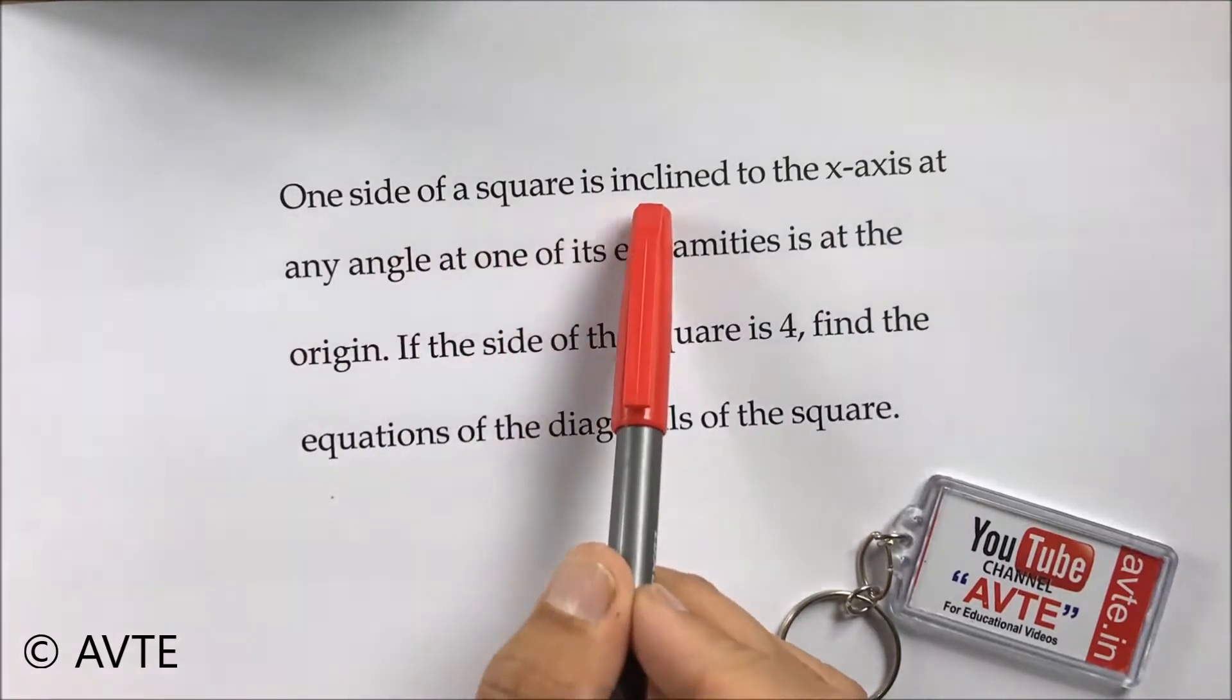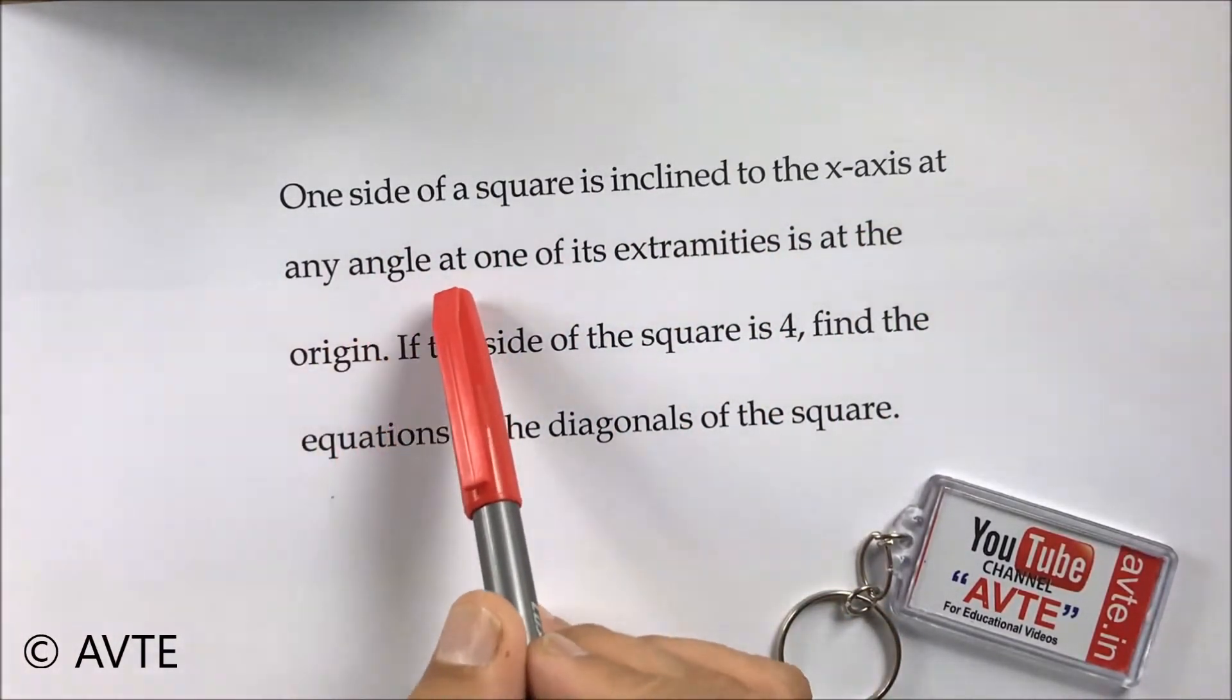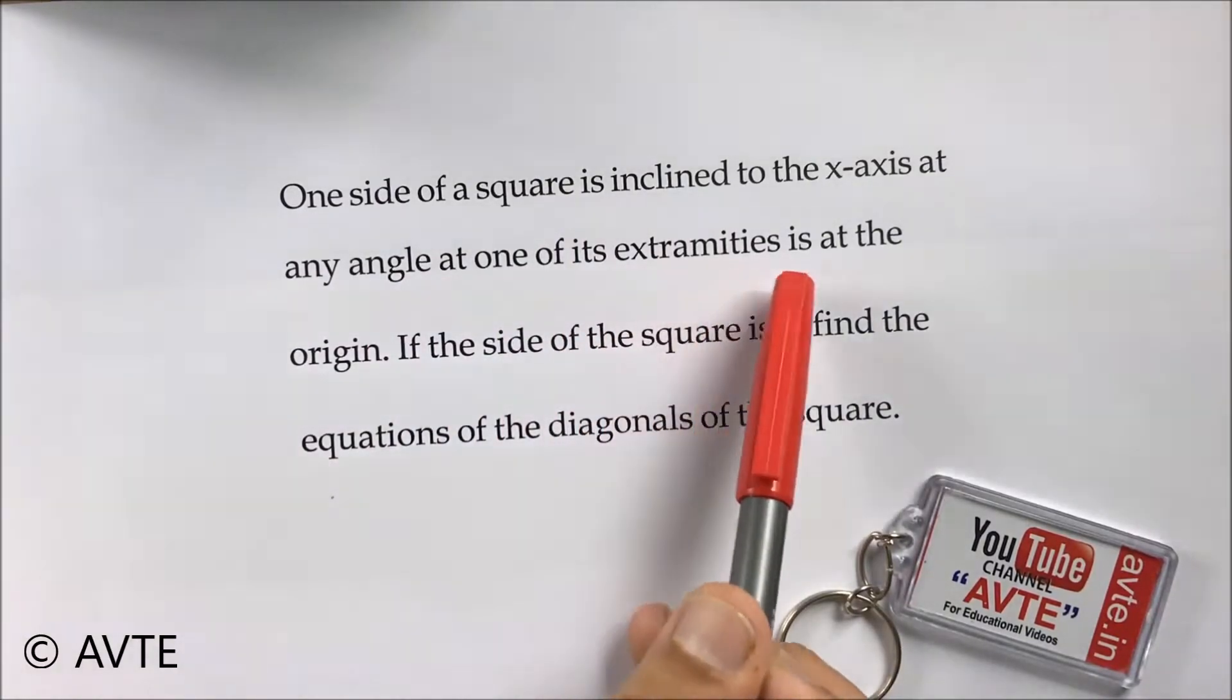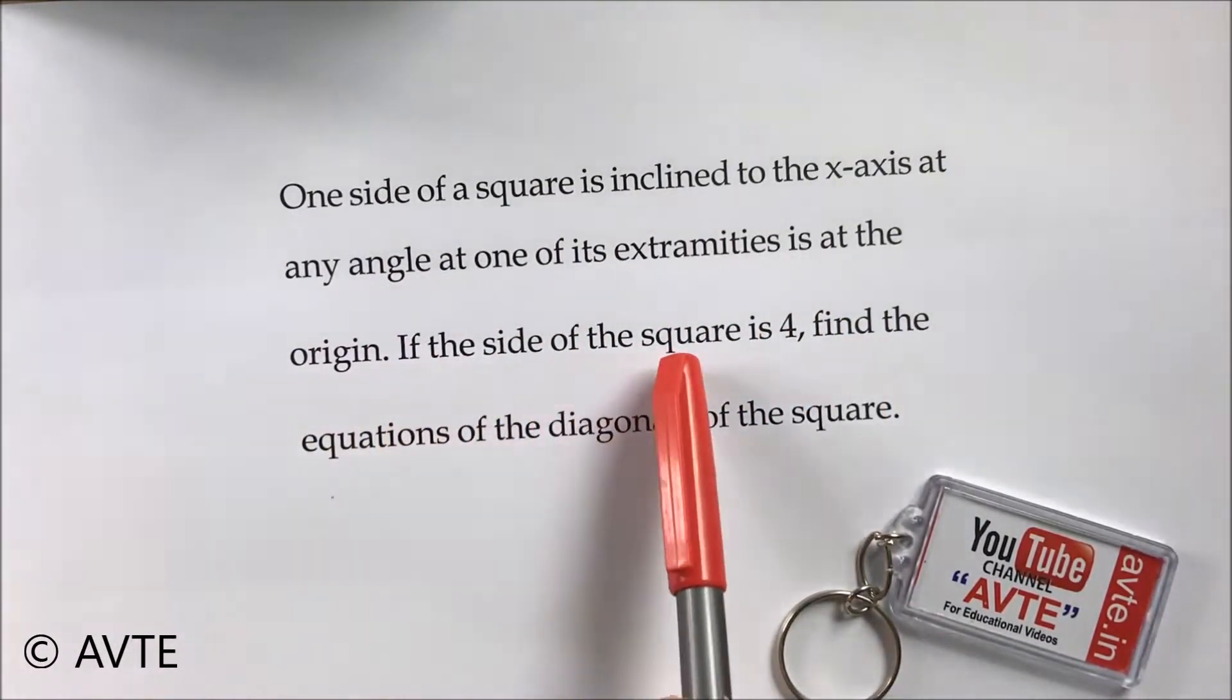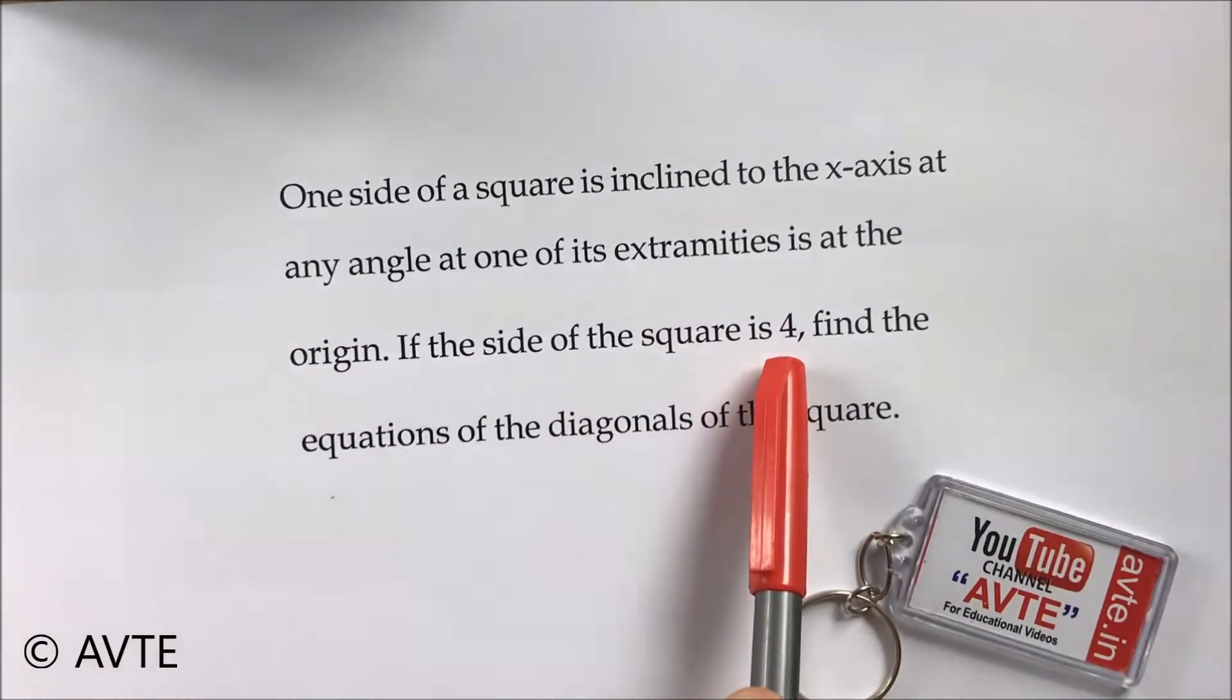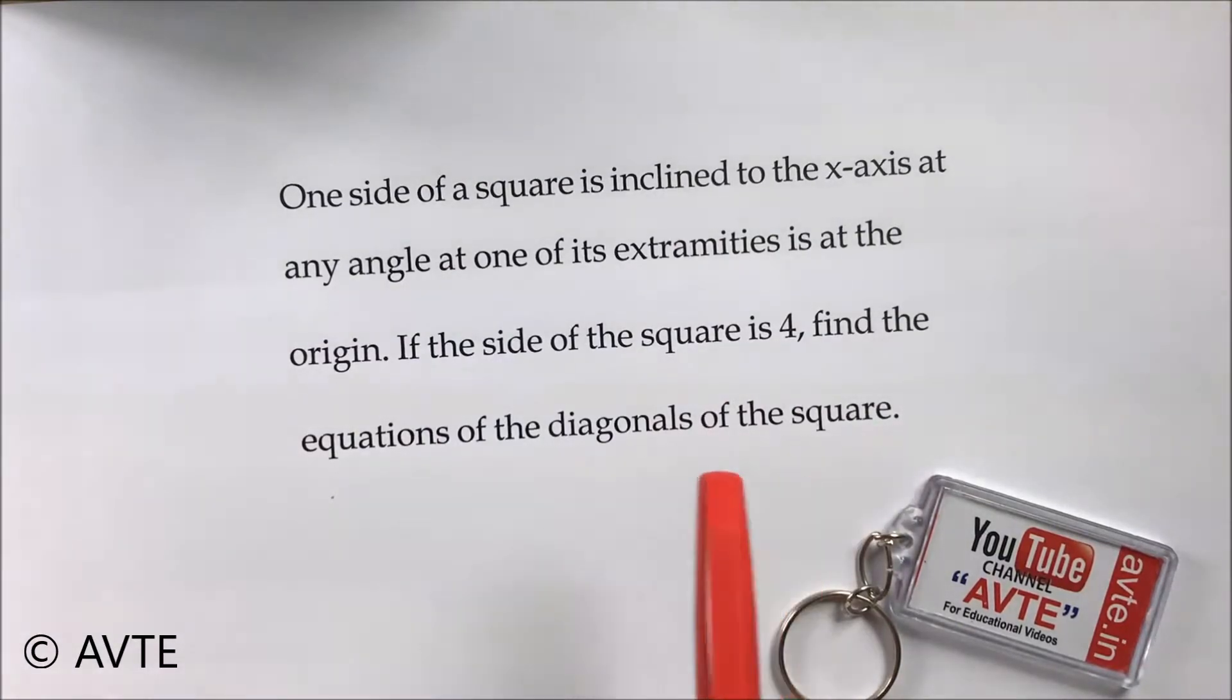One side of a square is inclined to the x-axis at any angle at one of its extremities is at the origin. If the side of a square is four units, find the equation of the diagonals of a square.